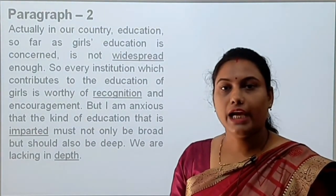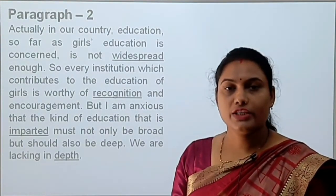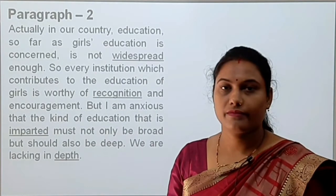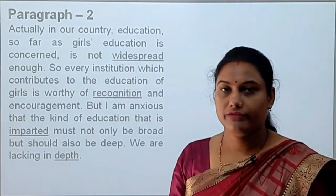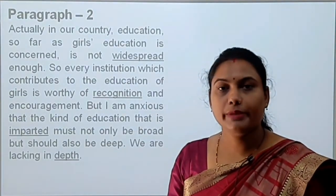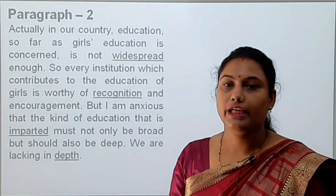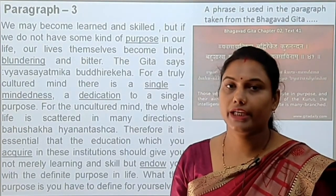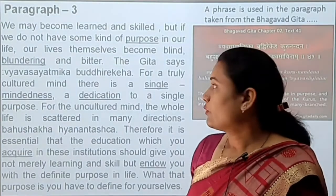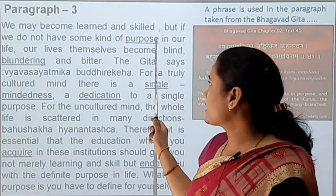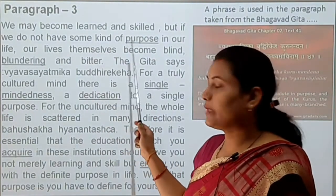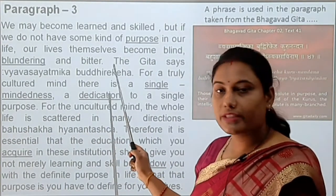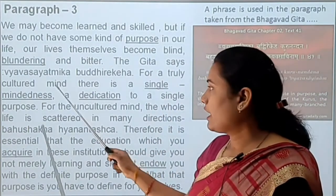Now I will ask some questions based on the paragraph. My first question is: what is the condition of girls' education in our country? It is not widespread enough. Next question: what should be the main purpose of the educational system? We will discuss the main purpose of education in the next paragraph. Now come to the third paragraph. We may become learned and skilled, but if we do not have some kind of purpose — purpose means aim — in our life, our lives themselves become blind, blundering and bitter. Blundering means full of serious mistakes.